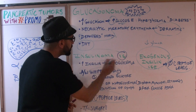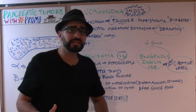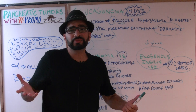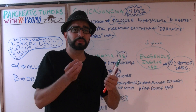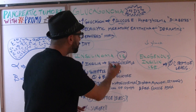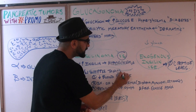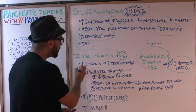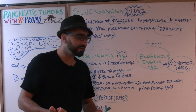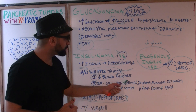When we talk about insulinomas, insulin levels are high. Insulin suppresses glucose levels, so the patient is going to present with hypoglycemia. You want to associate this condition with Whipple's triad. The first component: low blood glucose levels. Second: symptoms of hypoglycemia.